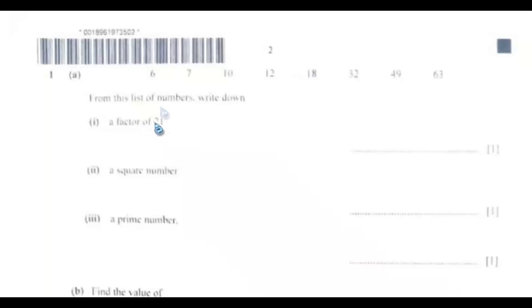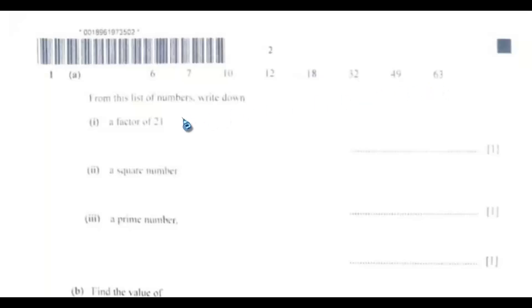From the list of numbers, write down a factor of 21. We have: 6, 7, 10, 12, 18, 32, 49, and 63. A factor of 21 is a number that can divide 21 without any remainder, so the answer is 7.